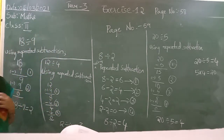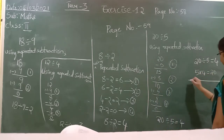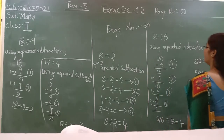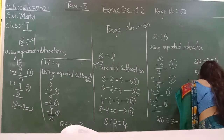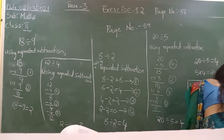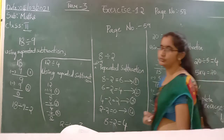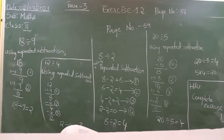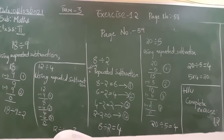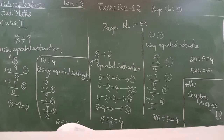Children, please write down all of this and complete your homework. The homework is to complete exercise 1.2 in Term 3 — that is page number 58 and 59. Please complete it. Thank you.